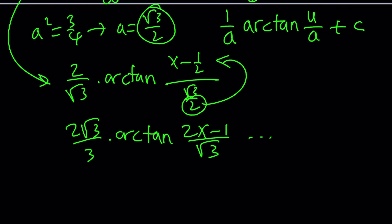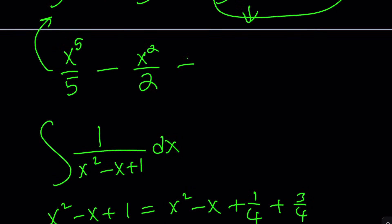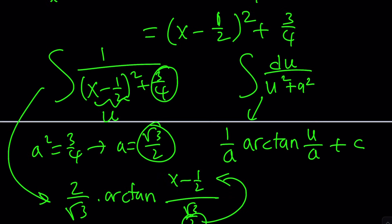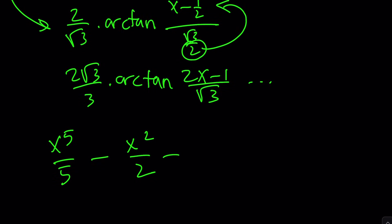Okay, let's go ahead and bring the other stuff in. So we had the x to the fifth and then plus the other stuff. So let's go ahead and bring it down. x to the fifth over five minus x squared over two. Did I copy that correctly? Let me make a lot of mistakes. You know that, right? Plus two root three over three times arctan two x minus one over root three. Let me put that in parentheses and put the constant. Don't forget that you lose a lot of points on the test.